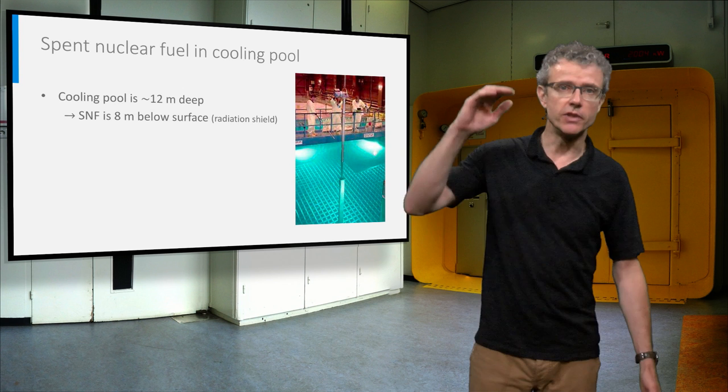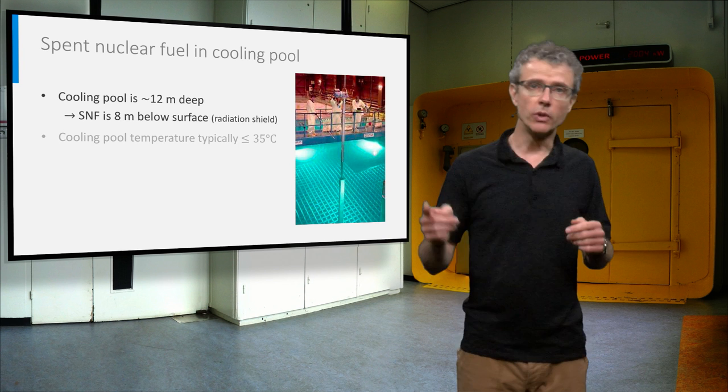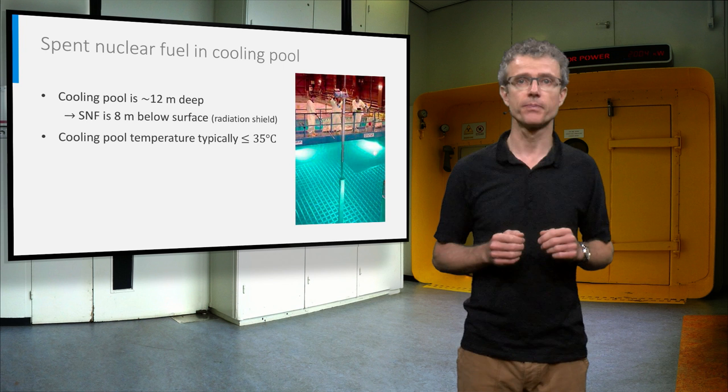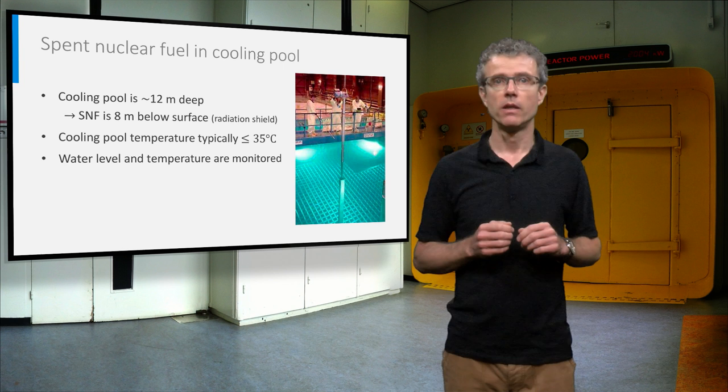A typical cooling pool is about 12 meters deep, so that the spent nuclear fuel is 8 meters below surface. The water functions as radiation shield and as coolant. A water cooling circuit keeps the pool temperature typically below 35 degrees Celsius. Water level and temperature are carefully monitored, and hydrogen detectors near the pool check for radiolysis of the water.